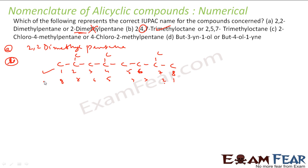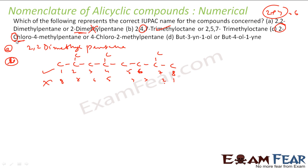So 2,4,7 is correct and 2,5,7 is not correct for option B. For option C: 2-chloro-4-methylpentane or 4-chloro-2-methylpentane. The sum of locants is 6 in both cases, creating a tie. So we give the lower number to the group that comes first alphabetically — that is chloro. Therefore 2-chloro-4-methylpentane is correct and 4-chloro is wrong.